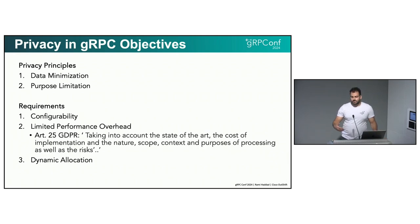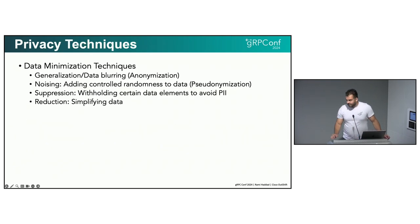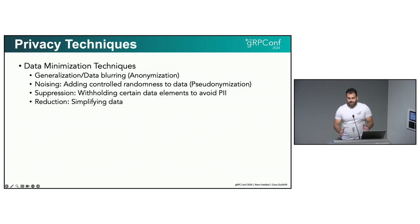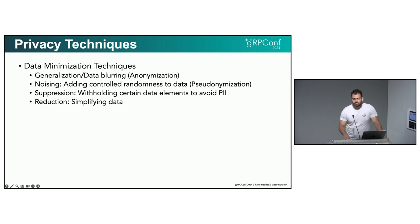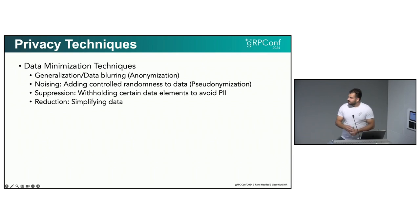There are a couple of techniques to show, and they differ a lot in intensity. Generalization or data blurring: for example, a date of birth can be generalized to age ranges. It really depends on the use case — in some applications that's not doable, but sometimes you can still provide relevant information for the specific operation, especially for statistical analysis applications. Then there is noising, which is adding controlled randomness — you replace certain data in the application. You can still make some form of context out of it, but binding it to a user's identity does not reveal further insight into their PII.